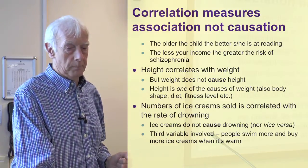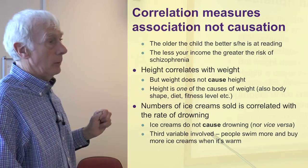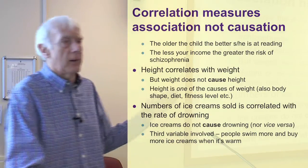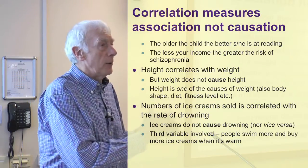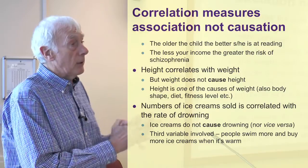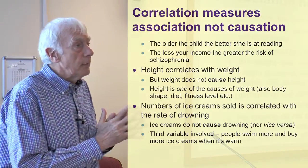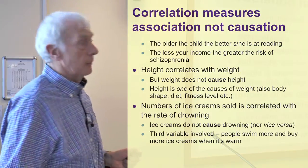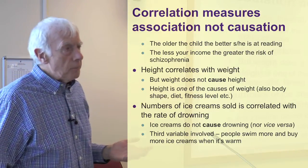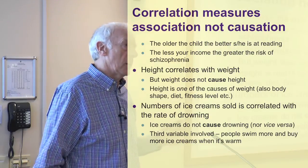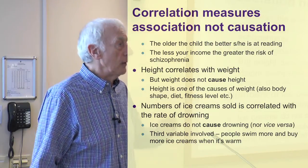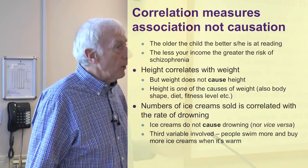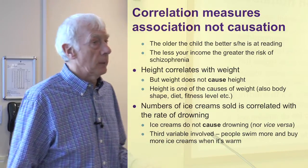For example, we might find that the older a child is, the better she is at reading. We know that and we have psychological theories that explain it. There is a correlation and we know there's a causal connection — but we can't infer that from the correlation alone. Likewise, we might find that the lower your income, the greater the risk of schizophrenia. There might be a causal connection — having schizophrenia may reduce your ability to earn — but from the correlation alone, you can't infer that.